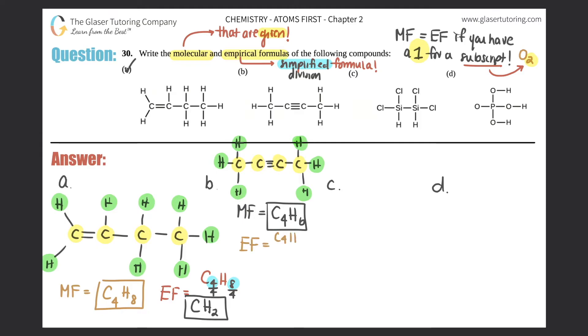Now can we simplify this molecular formula into an empirical formula? So C4H6. So I look at the four and I look at the six. Is there any number that's divisible by both of them? Yeah, right? Two. I could divide this by two and I could divide this by two. So my empirical formula would be C2H - what's six divided by two? It's three.